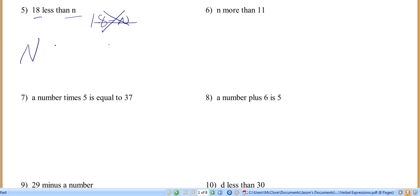Because we're doing something with n. So n is the main character of the story. Well, we're going to take 18 away from it, right? So 18 less than n would be n minus 18.